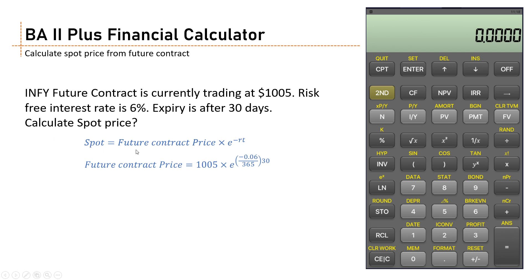To calculate the spot price, we simply bring the future contract price or the future value into present value. So future contract price times exponential minus r times t. We solve this equation: 1005, the value of the future contract, times exponential minus rt.